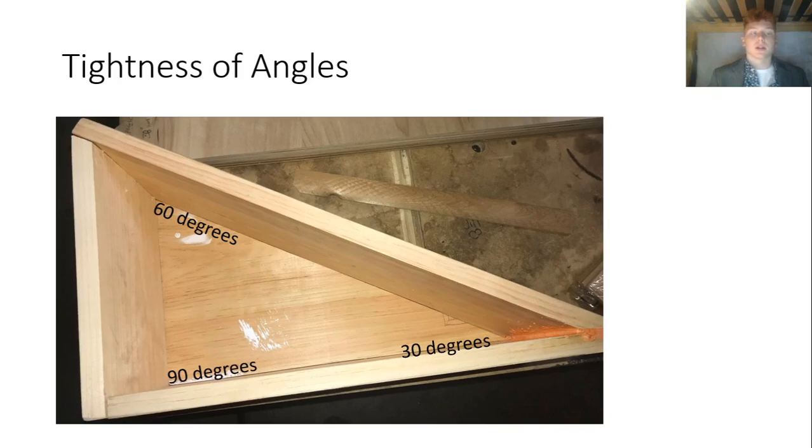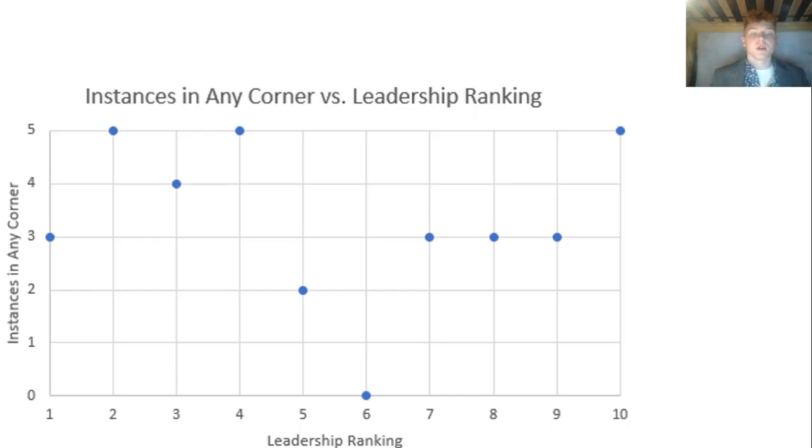So this was after Corona, so now I'm at my house and I want to thank my dad for helping me build all these apparatuses. So we first get into the tightness of angles using a 30-60-90 degree triangle. This graph basically just shows what we already knew, is that crickets tend to prefer to be in corners rather than in space.